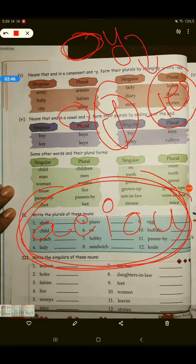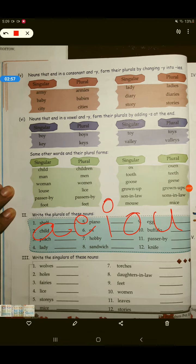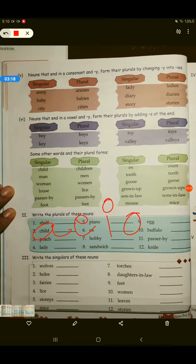For example, let's see the example and you'll understand better. consonant के बाद जो Y होता है, उसको हम हटाएंगे और I-E-S लगाएंगे. For example, army, A-R-M-Y होता है, तो हमने यहां से Y को हटा दिया और I-E-S लगा दिया. Armies, यह plural बन गया. Baby, babies. City, cities. Lady, ladies. Story, stories. Dairy, dairies. And diary, diaries.